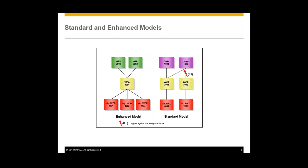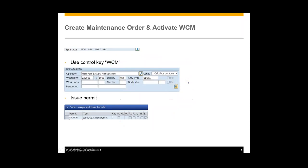Now we'll begin the actual workflow for the work clearance management, starting with a maintenance order. In this maintenance order in IW31, up at the top here we can see that once you activate work clearance management you'll see WCM in the system status. You can do this in two ways: one is entering the control key WCM into an operation using that drop down, and another way is to issue a permit to that particular work order, which will also activate work clearance management. Issuing permits is also required for this process, and right down here you can see a work permit that has been created.